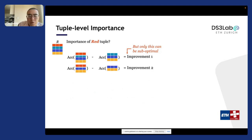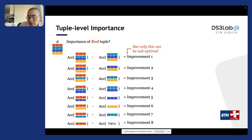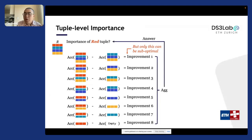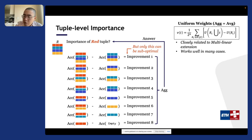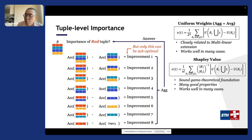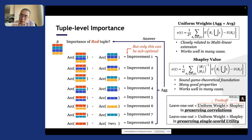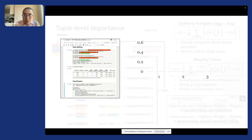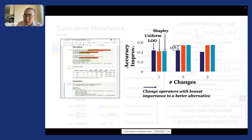A better approach is to consider all different combinations of other tuples, aggregate those improvements, and use that as actual importance. You can aggregate them by computing the average, which has a close relationship with multilinear extension and works well in many cases. You can also weight them in a specific way to get something called a Shapley value, which has strong game-theoretical foundations, many good properties, and has been shown to work well in many cases. In practice, both uniform weighting and Shapley value often outperform the leave-one-out notion significantly.